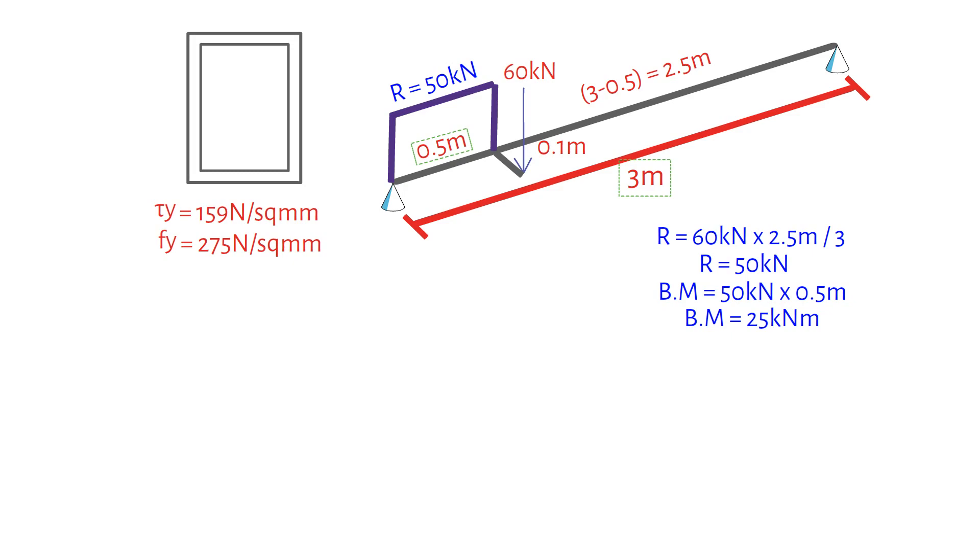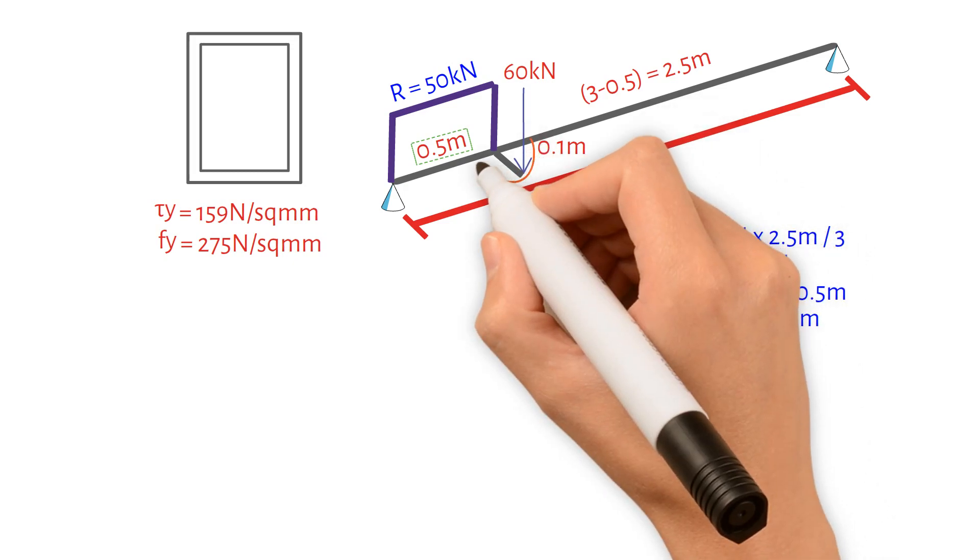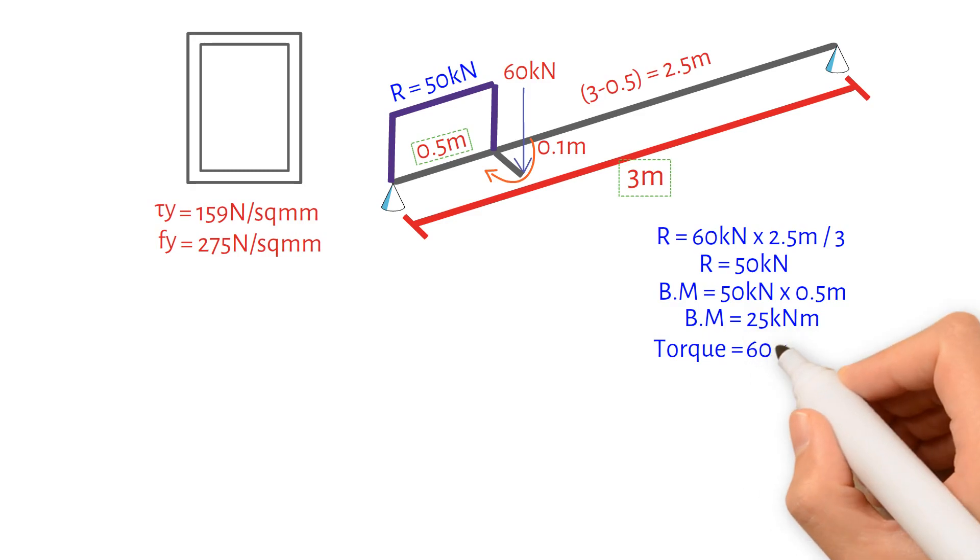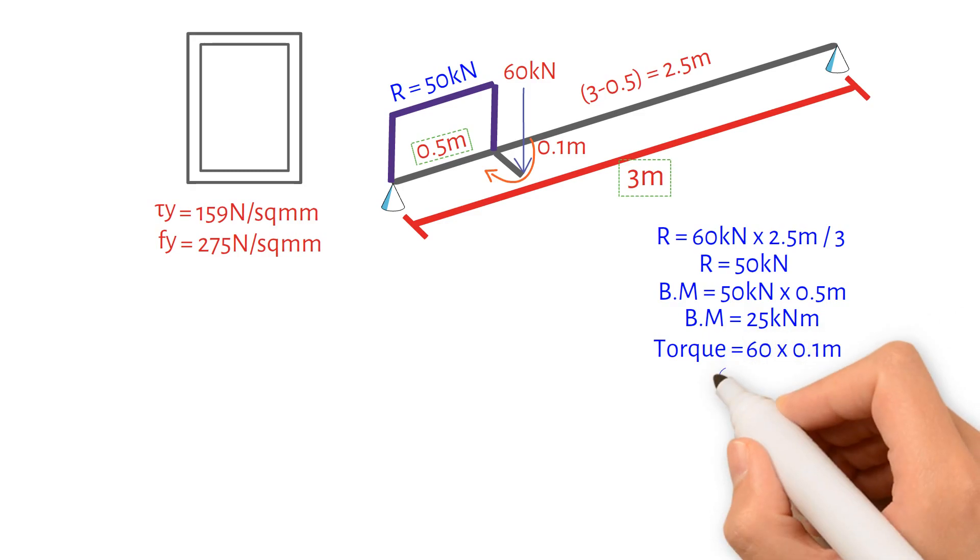We will also calculate the applied torque, which is 60 kN times 0.1 metres, resulting in 6 kN metres. Since both ends of the beam can resist torsion, the structure is considered indeterminate. Therefore, the torque will be distributed between the two ends in proportion to the torsional stiffness of the beam, each side of the load.